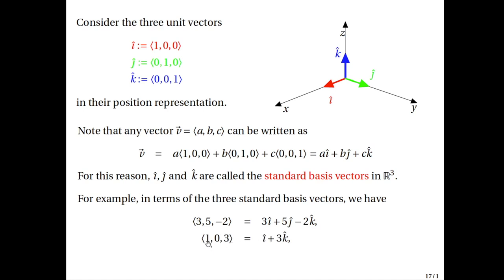The vector (1, 0, 3) can be written as i-hat + 3k-hat, and the vector (0, 7, −4) can be written as 7j-hat − 4k-hat.